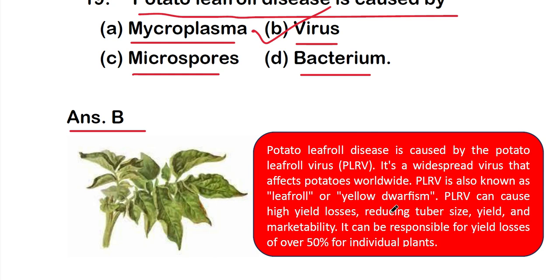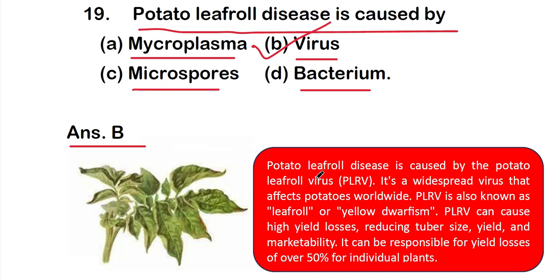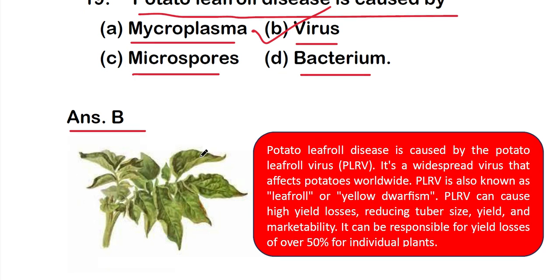PLRV can cause high yield losses, reducing tuber size, yield, and marketability. It can be responsible for yield losses of over 50% in individual plants.